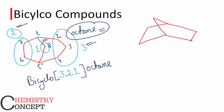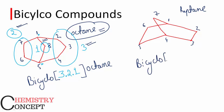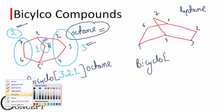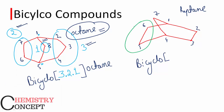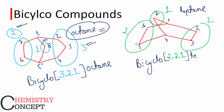In the next compound, there are six carbons total, so the compound is heptane. But again we start from the term 'bicyclo,' open square bracket, and write the number of carbon atoms in each portion. The first portion has two carbons, the second also has two, and the third has one — so we write bicyclo[2.2.1], bracket closed, heptane. I hope that was clear.